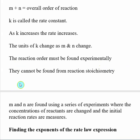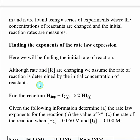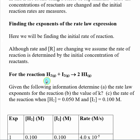The reaction order must be found experimentally — they cannot be found from reaction stoichiometry. How we actually do this is we do a series of experiments where the concentration of reactants are changed, and then we find the initial reaction rate. From that information, we can find the exponents of our rate law expression. The beauty of using initial reaction rates is that even though concentrations are changing, we assume the rate is determined by the initial concentration of reactants.